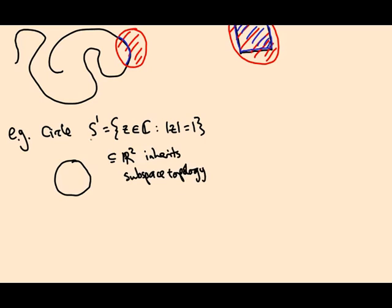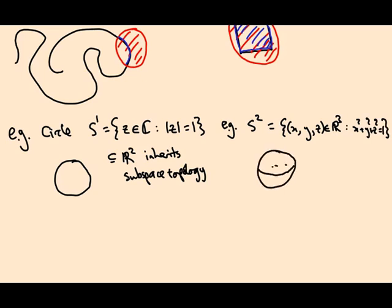Whenever I talk about the circle, this is the topology I mean. In higher dimensions you get spheres: for example, S2 is the set of points (x, y, z) in R3 such that x² + y² + z² = 1. This is the surface of the Earth. It inherits a subspace topology from R3. More generally, the 3-sphere sitting in R4, the 4-sphere in R5, and so on — they all inherit topologies from the ambient Euclidean space, which has a topology because it's a metric space.